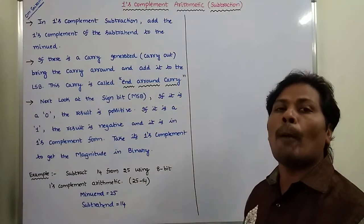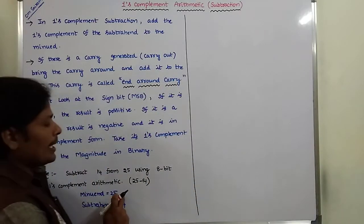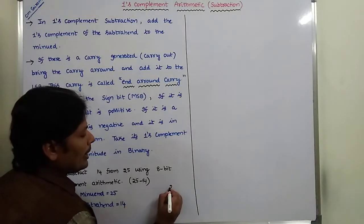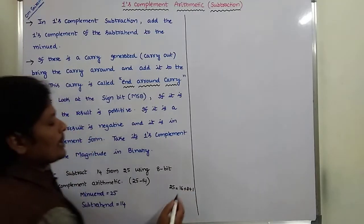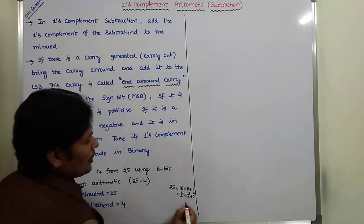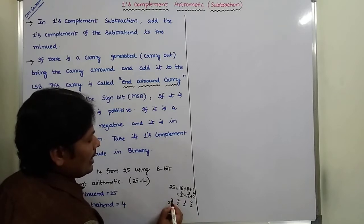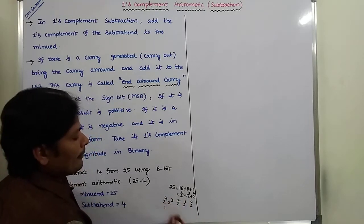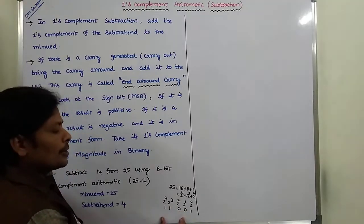This subtraction is performed using One's Complement. Now, 25 can be represented in binary form. 25 can be taken as 16 plus 8 plus 1, that is 2 power 4, 2 power 3, and 2 power 0. So the bits for 2 power 4 and 2 power 3 and 2 power 0 are 1, and the remaining bits are 0s. This is the binary form of 25.